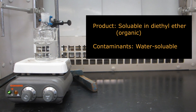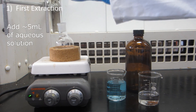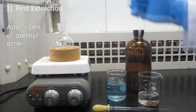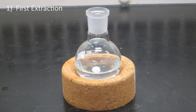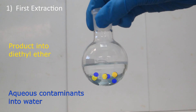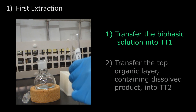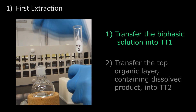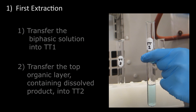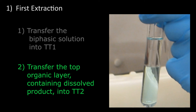Microscale technique: Suppose we've created a product that is soluble in diethyl ether but it contains water-soluble contaminants. First, we would add about 5 ml of distilled water or other aqueous solution, and add about 3 ml of diethyl ether to the reaction flask, stir, and then allow the solution to sit for about 1 minute. In doing so, we have begun separating the aqueous contaminants into the water and the product into the diethyl ether. Use a pipette to transfer the solution into the first clean test tube labeled TT1. Then get another clean pipette and transfer the top organic layer containing the product dissolved in diethyl ether into a second test tube, TT2.